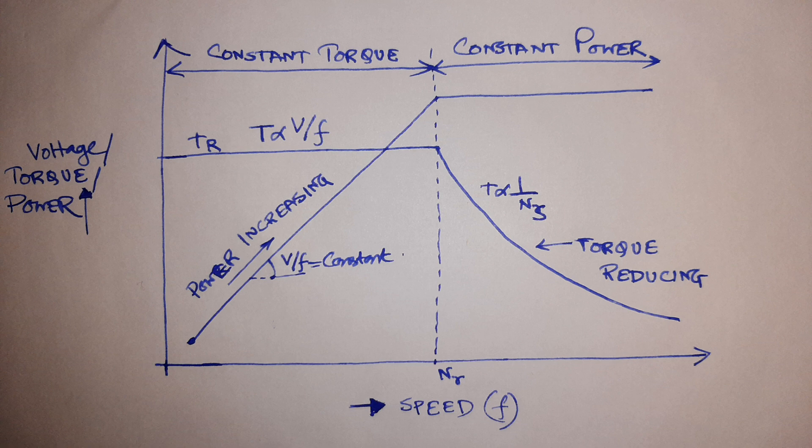You can see that we have marked the rated speed as Nr. From speed zero up to Nr, the region is a constant torque zone. In that region, the motor will deliver constant torque.